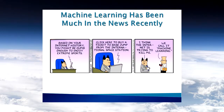Another cartoon features a character whose computer doesn't respect him highly either: 'Based on your internet history, you might be dumb enough to enjoy extreme sports. Click here to buy a ticket to base jump from the International Space Station.' He says, 'I think the internet is trying to kill me.' We call it machine learning.